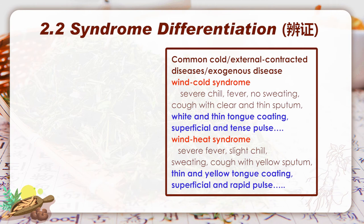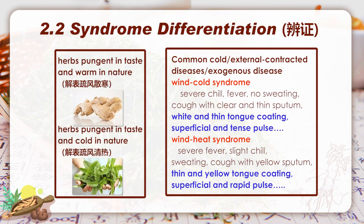For example, in wind-cold syndrome of a common cold, we usually see severe chills, fever, no sweating, cough with clear and thin sputum, white and thin tongue coating, and a superficial and tense pulse. In wind-heat syndrome, the patient presents severe fever, slight sweating, cough with yellow sputum, thin and yellow tongue coating, and a superficial and rapid pulse. For treatment, in wind-cold we apply pungent and warm herbs, which can resolve the exterior, dispel wind, and dissipate cold. In wind-heat, pungent and cold herbs are applied instead, which can resolve the exterior, dispel wind, and clear heat.